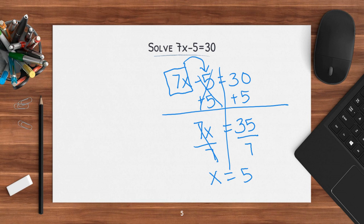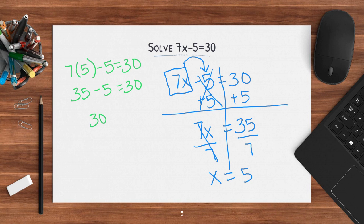Now if I plug this back in, I have 7 times 5 minus 5 equals 30. 7 times 5 is 35, and then 35 minus 5 equals 30. So 30 equals 30 — boom, got it right. Good job.